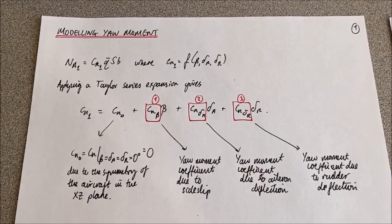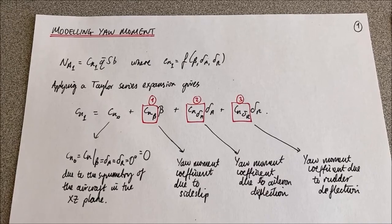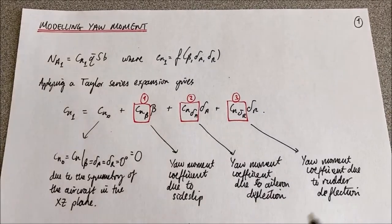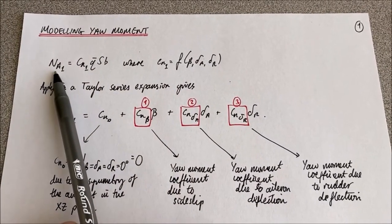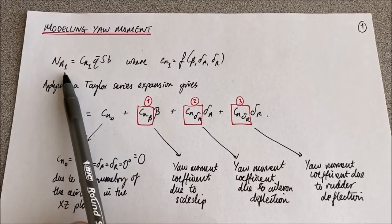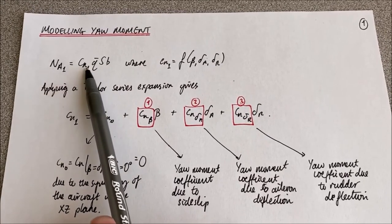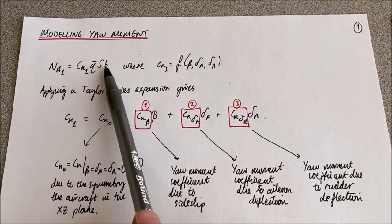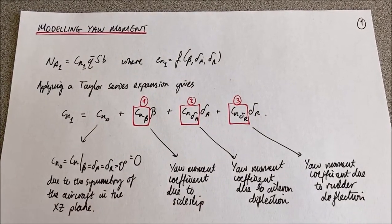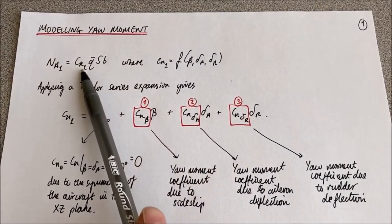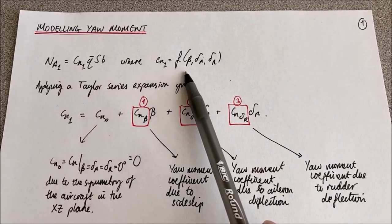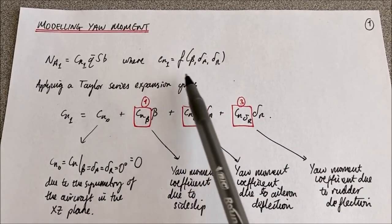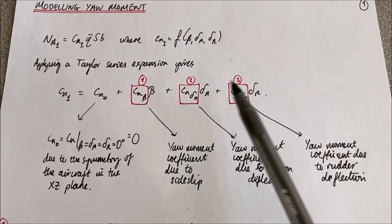Let's move on to the final lateral-directional stability moment: the yaw moment. We start off in exactly the same way as before — we define our yaw moment in the steady-state condition as a yaw moment coefficient multiplied by the dynamic pressure, wing reference area, and characterize it based on the wing span. This yaw moment coefficient is a function of the sideslip angle, aileron deflection angle, and rudder deflection angle. We can apply a Taylor series expansion to get our working expression.